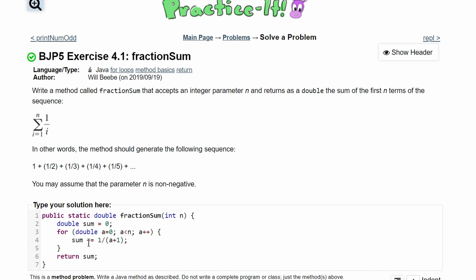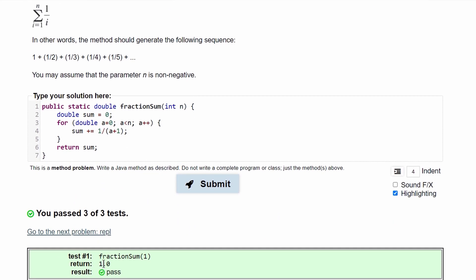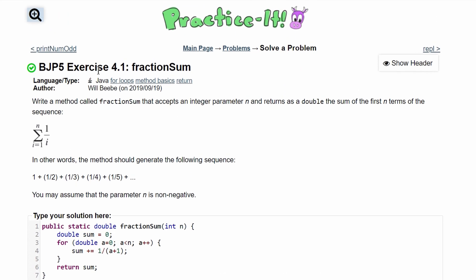Doing all of this and we hit submit, we pass 3 out of 3 tests. So this is the method for exercise 4.1.